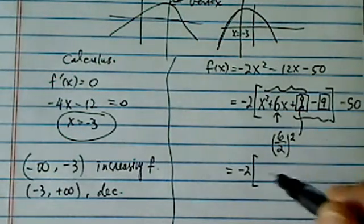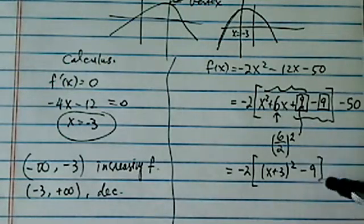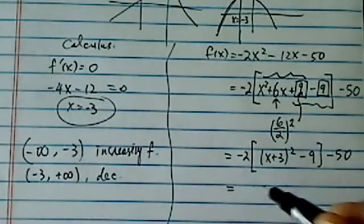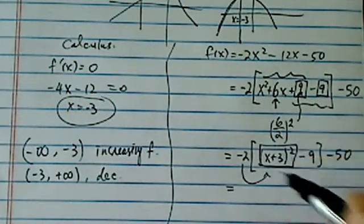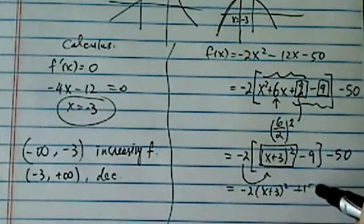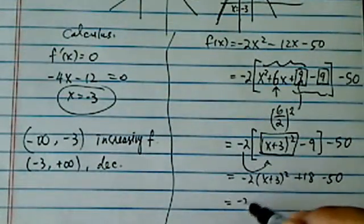Let's complete the first three terms. I have (x + 3)² - 9, minus 50 over here. And then let's distribute this -2. Do not open this box. So I have -2(x + 3)² + 18 - 50.